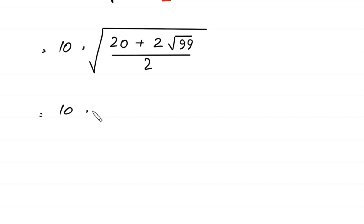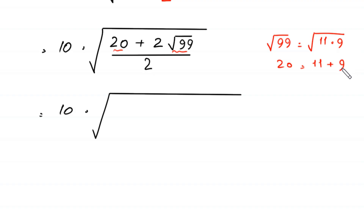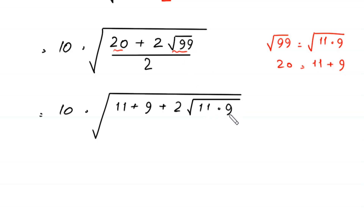Next, 10 times square root of — now square root of 99 can be written as square root of 11 times 9. So we split this 20 as 11 plus 9, giving us 11 plus 9 plus 2 times square root of 11 times 9, divided by 2.